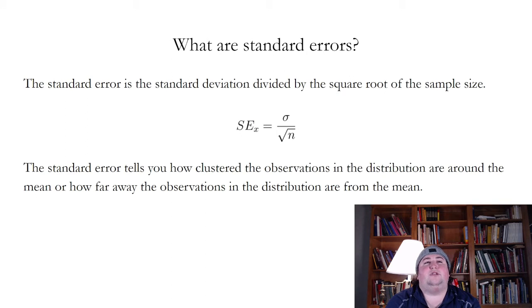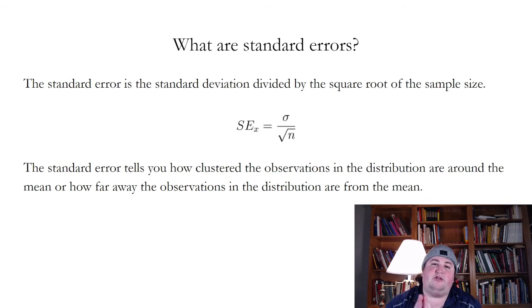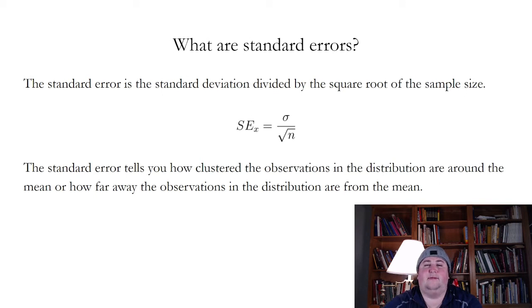What are standard errors? The standard error is the standard deviation divided by the square root of the sample size. Standard deviation is generally how dispersed the data is around the mean. So if the data is really clustered close to the mean and really centered on it, it's going to have a low standard deviation.